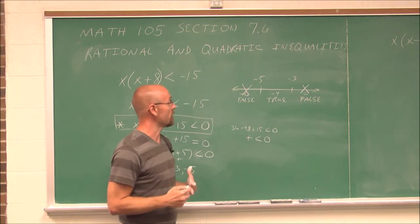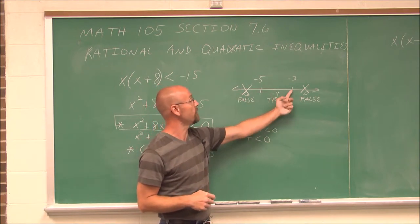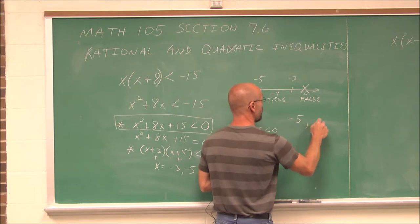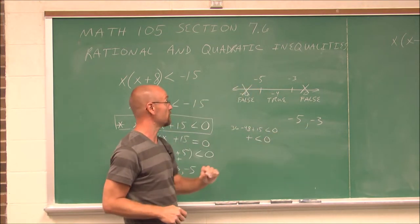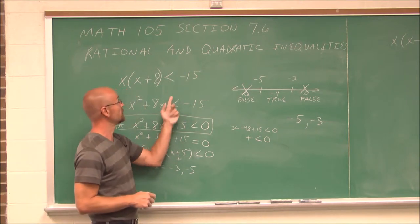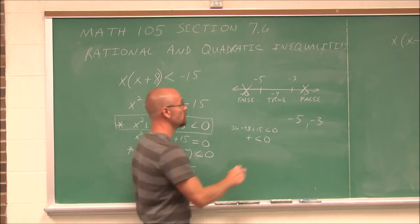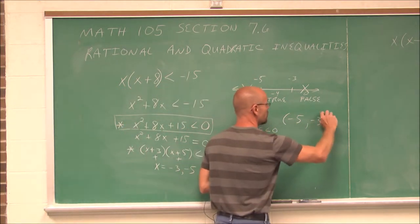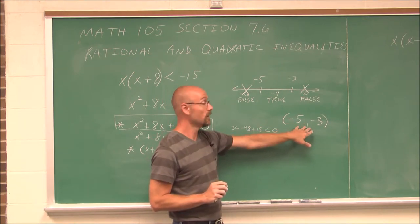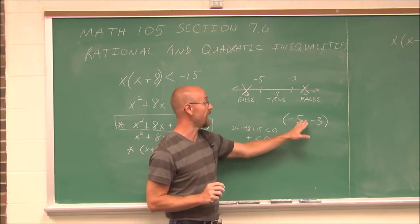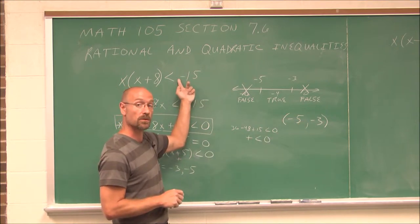So the only interval that I found that makes it true is between negative 5 and negative 3. From negative 5 to negative 3 — the reason I didn't put in my parentheses yet for interval notation is I go back to the sign and say, well, this original sign is less than, which means not equal to. It does not include the critical values. This is the solution from negative 5 to negative 3. Any value in between there will make the original inequality a true statement.